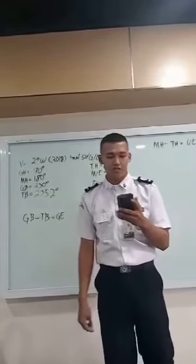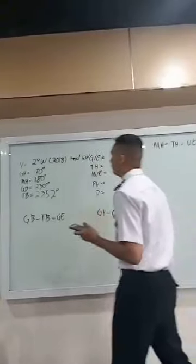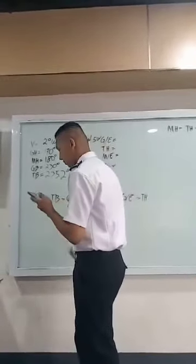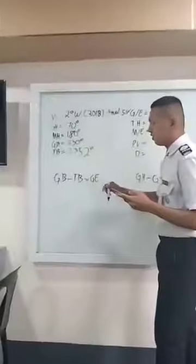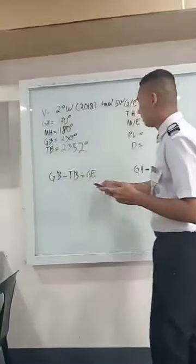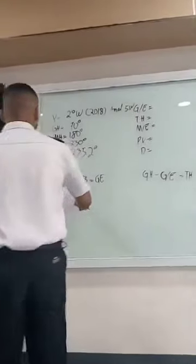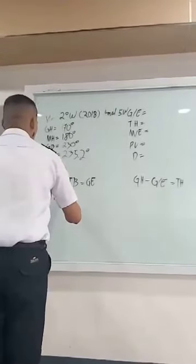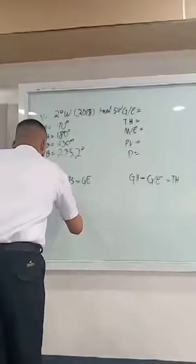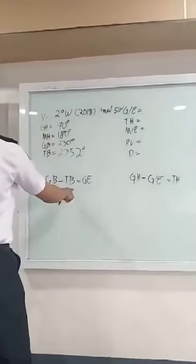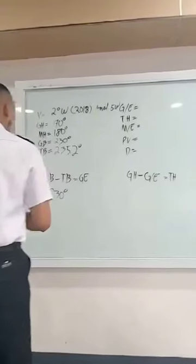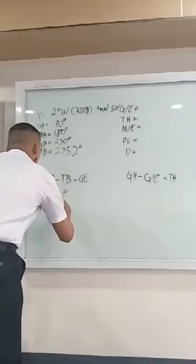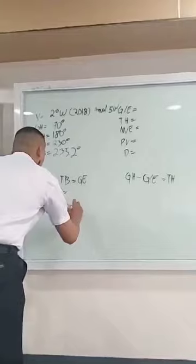First, I will show you how to get the gyro error. And this is the formula of how to get gyro error. First, gyro bearing is 230 degrees and the true bearing is 235.2 degrees. And we will subtract that degrees.